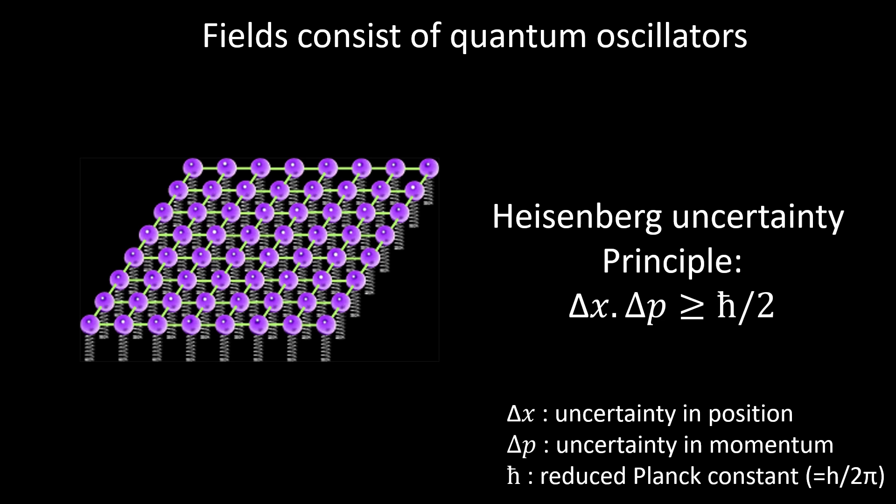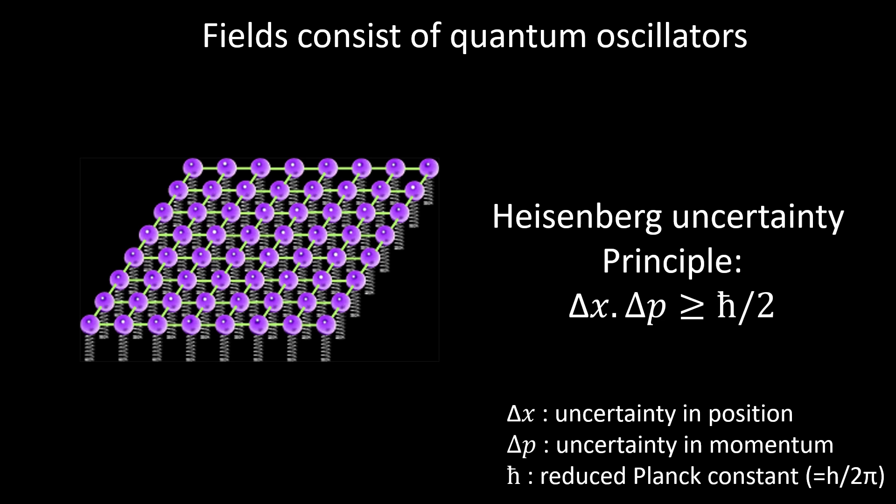The thing is that these quantum oscillators cannot be addressed and have zero energy. And this follows directly from one of the other fundaments of quantum mechanics, the Heisenberg uncertainty principle. This principle states that the product of the uncertainty in position and momentum of, well, anything basically, cannot be zero.